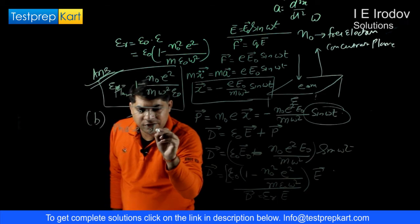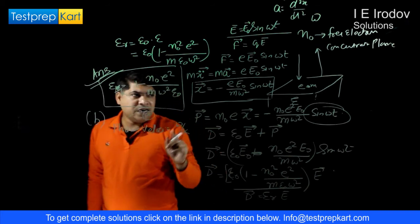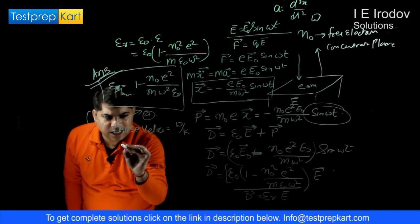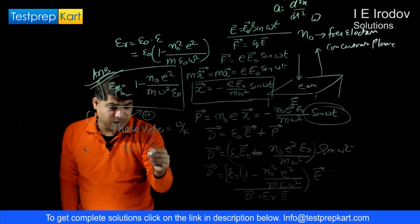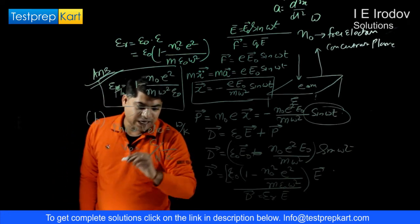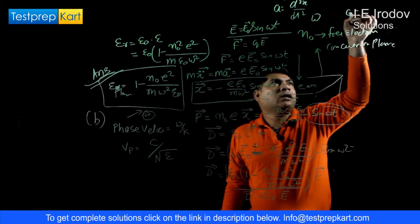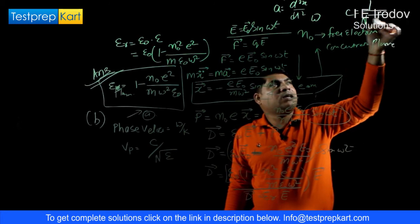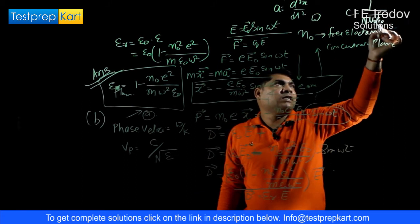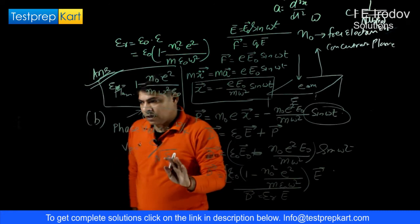Now for part B, we calculate the phase velocity. Phase velocity is Vp = omega/k. In plasma, knowing the permittivity of the medium, we can write Vp = c / sqrt(epsilon), because the speed of light is c = 1/sqrt(mu0 epsilon0), and in a medium we replace epsilon0 with epsilon * epsilon_r.